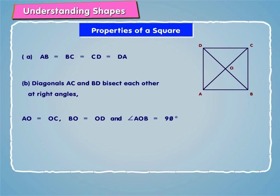We have an additional property in a square which states the diagonals of a square are equal, i.e. AC is equal to BD.